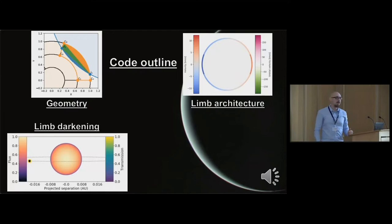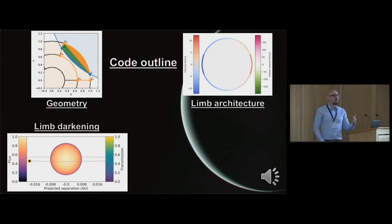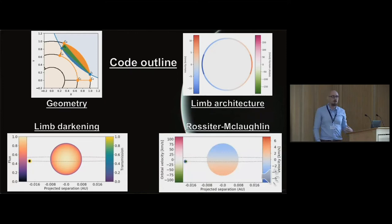You also have to worry about the star - limb darkening must be taken into account. I have a full stellar model underneath the transit spectrum, which correctly accounts for things like center-to-limb variation in stellar lines. The limb darkening in the middle of a spectral line is different from outside it, so as a planet moves with a differential velocity, the limb darkening it experiences changes as a function of time. The Rossiter-McLaughlin effect is also included, with a velocity field added to the stellar model.